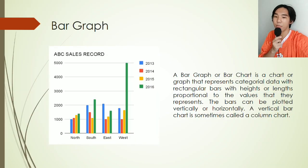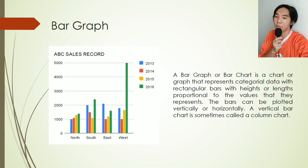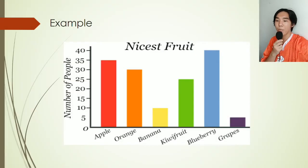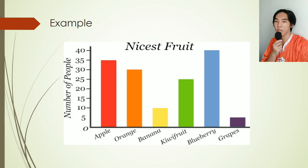Next is bar graph. A bar graph or bar chart is a chart or graph that represents categorical data with rectangular bars with heights or lengths proportional to the values that they represent. The bars can be plotted vertically or horizontally. A vertical bar chart is sometimes called a column chart. Bar graphs are extremely effective visuals to use in presentations and reports.